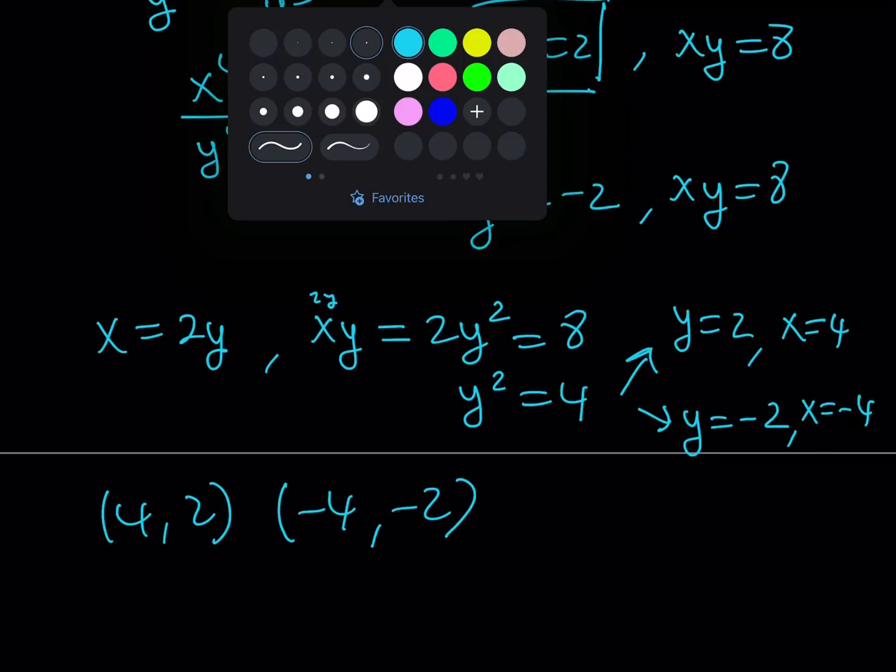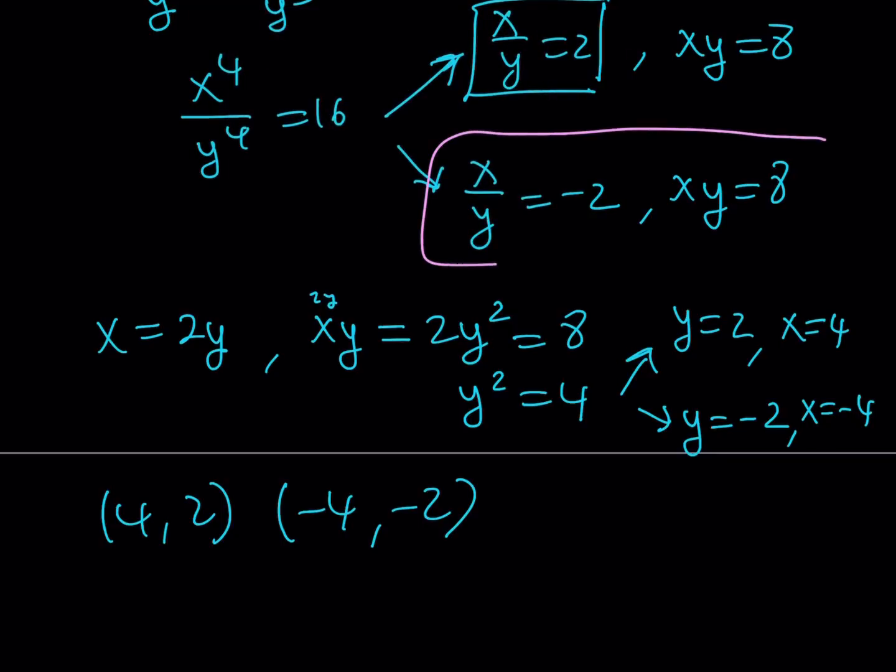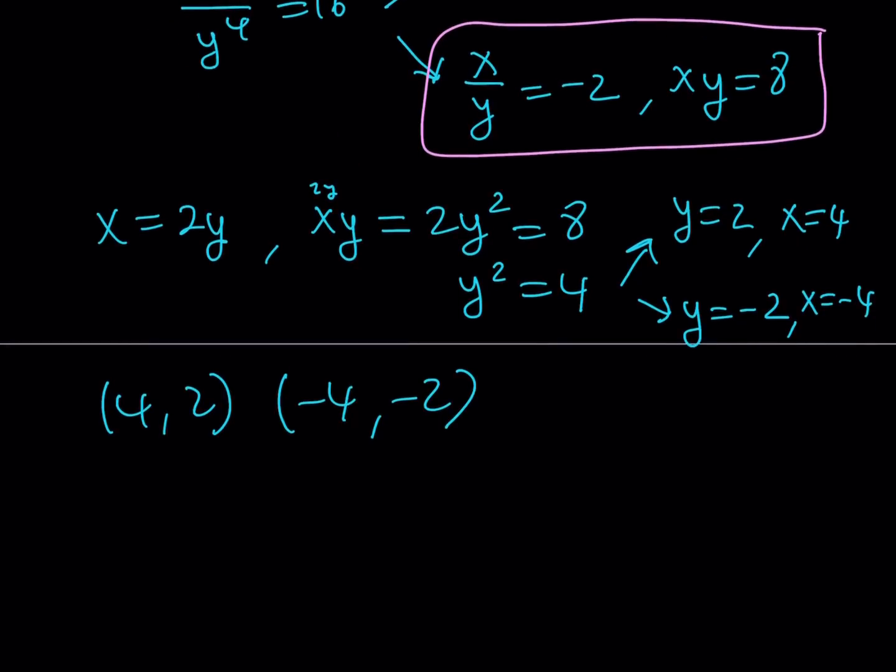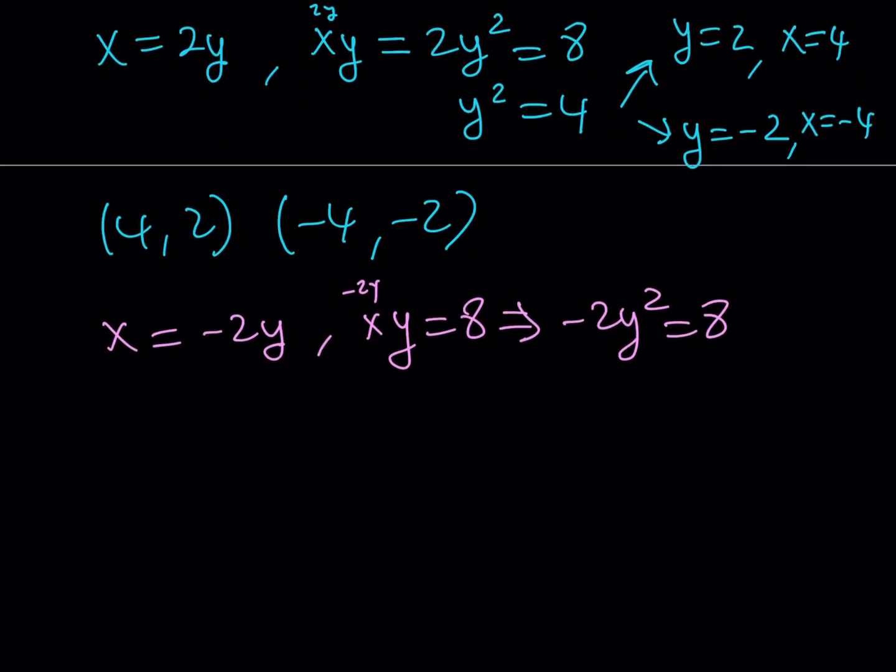Now that's from the first equation that I got. Let's go ahead and use the second equation now. I still have xy equals 8, but this time I have a different relationship, x equals negative 2y. I can just go ahead and replace x with negative 2y, and that's going to give you negative 2y squared equals 8.